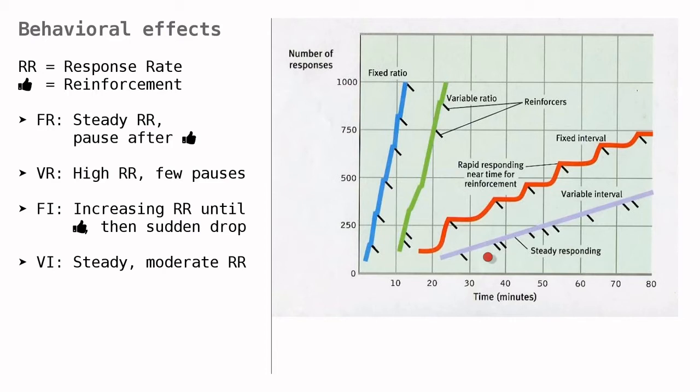Variable interval or VI schedules give a steady rate of responding, like VR schedule, but often not a very high rate. This makes sense because more responding earns you more rewards only up to a point. You need to respond to get the reward, but you also need to wait an unpredictable amount of time until the next reward is available. As long as you respond once in a while, you can earn pretty much all of the scheduled rewards. It does not make sense to respond much more than that.